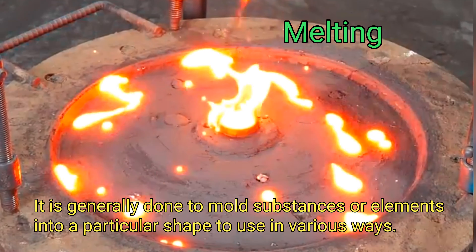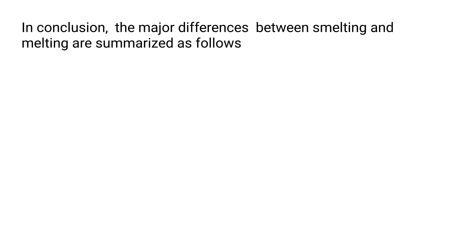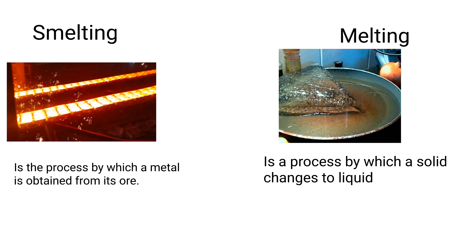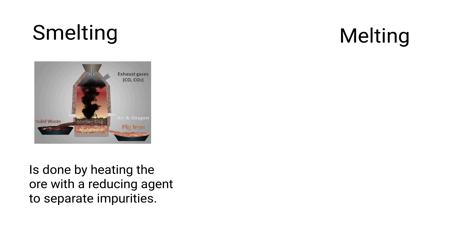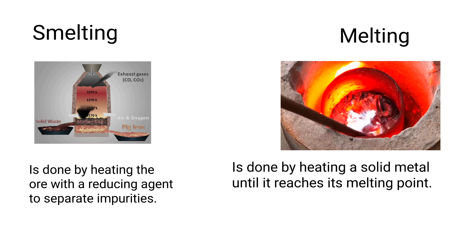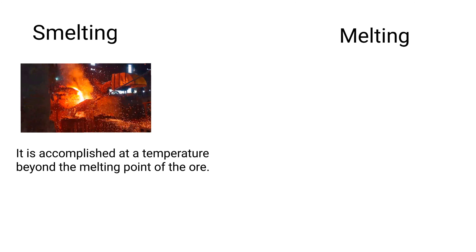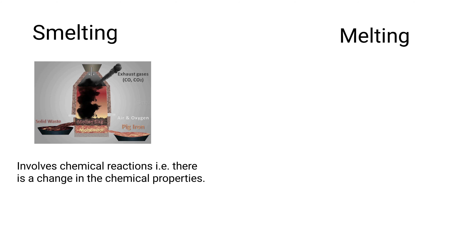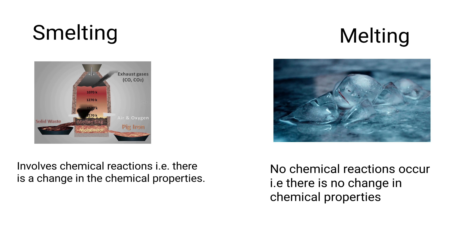It is generally done to mold substances or elements into a particular shape for use in various ways. In conclusion, the major differences between smelting and melting are summarized as follows. First, smelting is the process by which a metal is obtained from its ore, while melting is a process by which a solid changes to liquid. Second, smelting is done by heating the ore with a reducing agent to separate impurities, while melting is done by heating a solid metal until it reaches its melting point. Third, smelting is accomplished at a temperature beyond the melting point of the ore, while melting takes place at the melting point of the substance. Fourth, smelting involves chemical reactions — that is, there is a change in chemical properties — while in melting no chemical reactions occur, meaning there is no change in chemical properties.